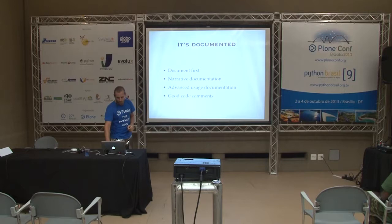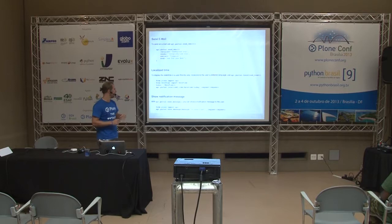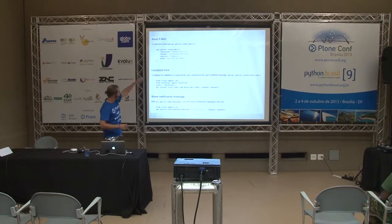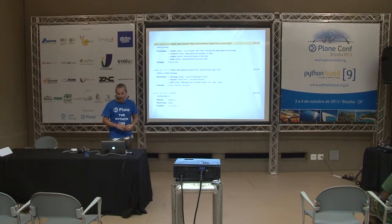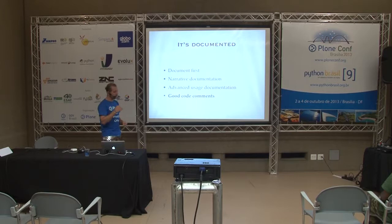Plone API comes with narrative documentation that gives you basic examples of how you would use it in a nice structured way. If you click on any of it, the narrative documentation links you to advanced documentation where the entire API is spec'd — documentation for every parameter, what happens if you do this — covering the full use case of Plone API. Also, the code itself, if you look at the source, has really good comments.